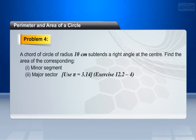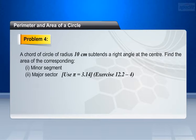For a chord of a circle of radius 10 cm that subtends a right angle at the center, find the area of the corresponding minor segment and major sector. Use pi equals 3.14.